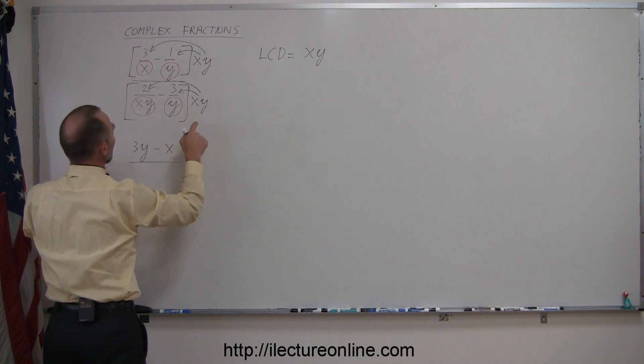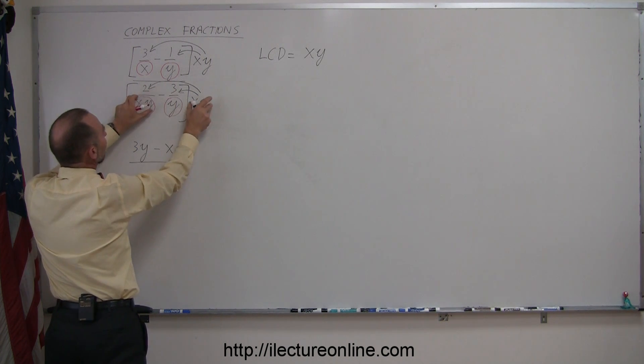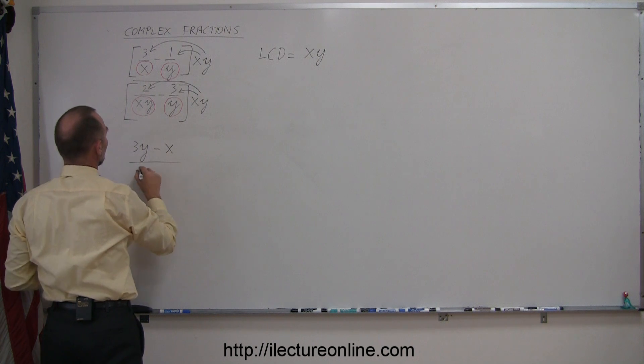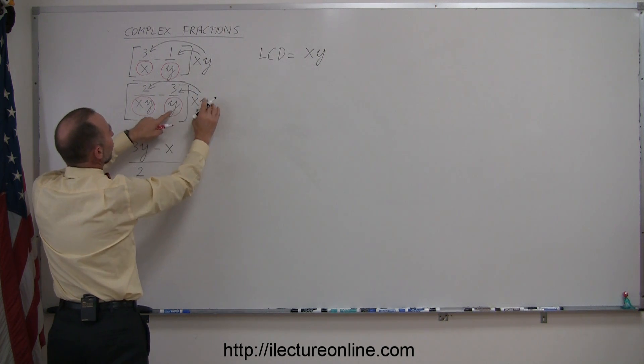In the denominator, when I multiply these two out, this times this, both x and y cancel out, and I'm left with simply a 2. And here, when I multiply this times this, the y's will cancel out, and I'm left with 3 times x.